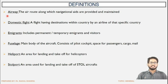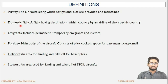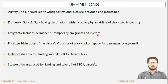Lastly, we will see some definitions. First is the airway — the route along which navigation aids are provided. Domestic flight is a flight having origin and destination within the country, operated by an airline of that same country. Immigrants includes permanent or temporary immigrants leaving a certain country going towards another country, and also visitors leaving the country for a short period of time.